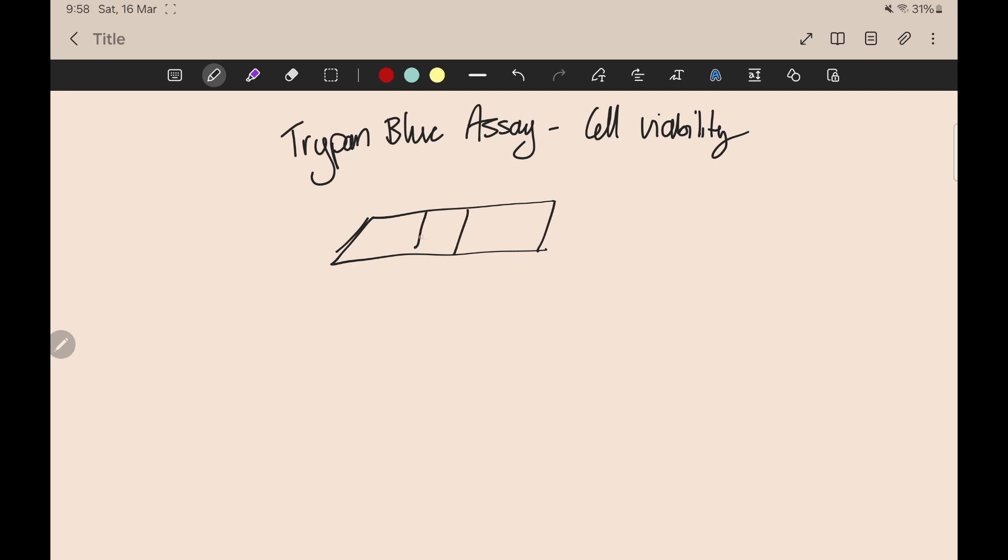So they have a section in the middle. And usually this section, if you look at it under a microscope, it has a grid. So it'll have a big grid. And then that big grid will have even smaller grids inside it. Now, people use different methods for counting and averaging on hemocytometers. And it often is down to how accurate you need to be.